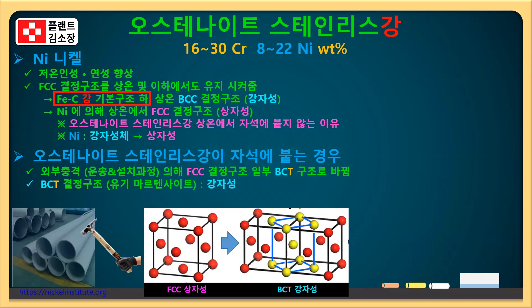여기서 아주 중요한 점은 내식성의 변화인데요. 자석이 붙을 경우 오스테나이트 스테인리스 강의 고유 특성인 내식성의 문제가 발생된 것 아니냐라고 생각할 수도 있습니다. 하지만 결정 구조가 바뀌어서 기계적 특성이 조금 바뀔 수는 있지만 배관 내부의 합금 원소 성분은 여전히 동일함으로, 배관 외부의 크랙이나 깊은 스크래치가 나지 않은 이상 내식성에는 변화가 없다는 점 꼭 기억해두세요.